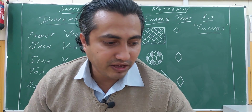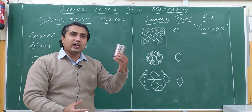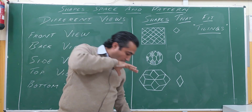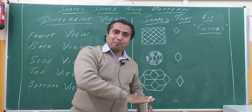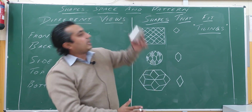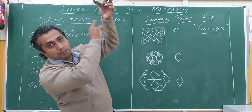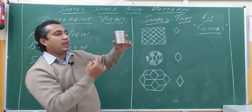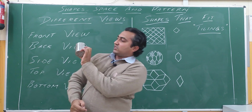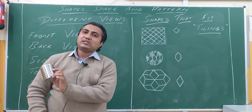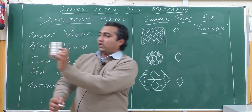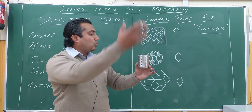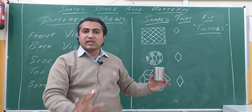Now let me explain with another shape. This is a cylindrical shape. If we are looking from the top, we can see the top part — so that is the top view. If we look from below, we can see the bottom — so that is the bottom view. But because this is a circle, whether you look from this side or that side, it remains the same. So side view, front view, and back view are all the same.